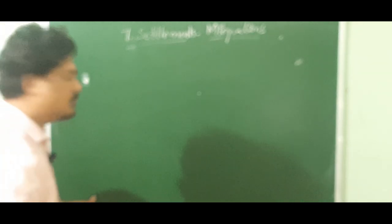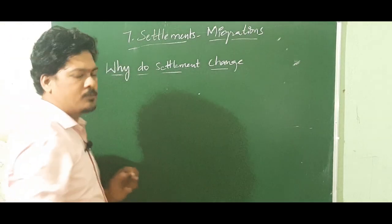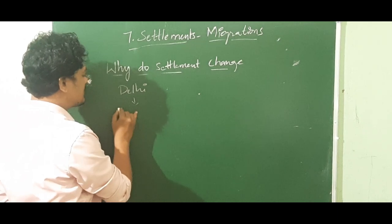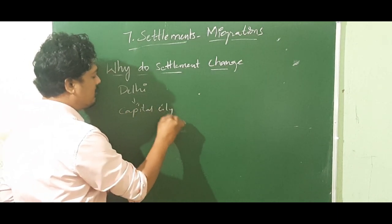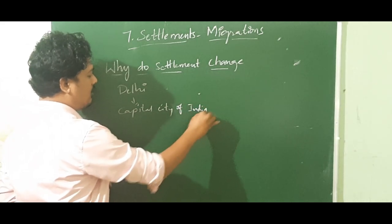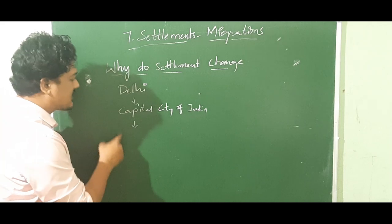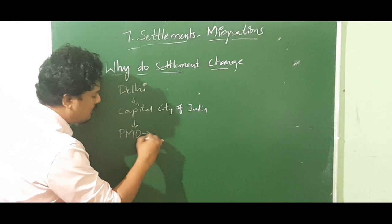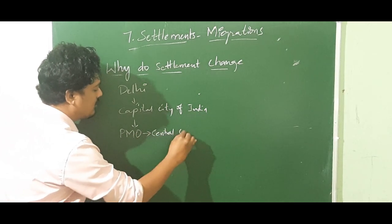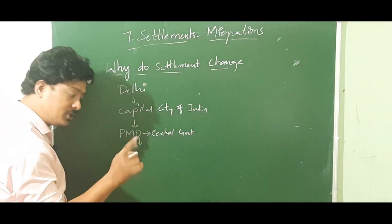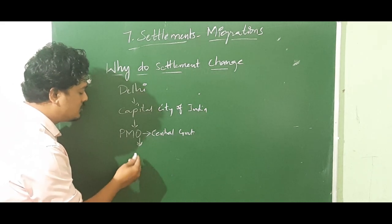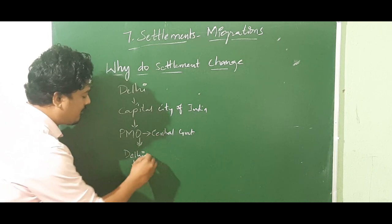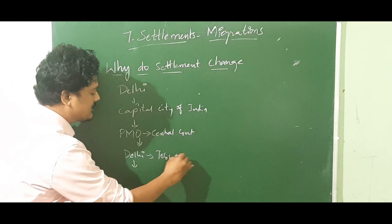Now, why do settlements change? In our textbook the example of Delhi is given. Delhi is the capital city of India. Here you can find the PMO — the Prime Minister's Office — and various central government offices. So most of the people, in search of jobs and education, have gone to Delhi or will go to Delhi.